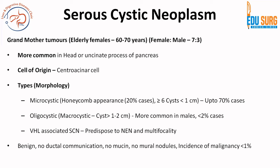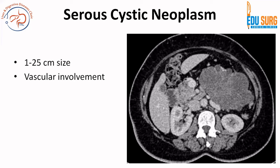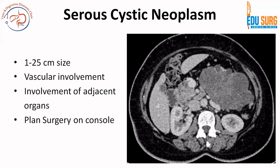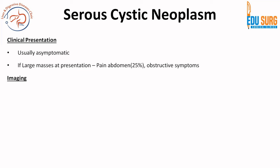Serous cystic neoplasms are benign. There is no ductal communication, no mucin, and no mural nodule — all our M's are absent. Incidence of malignancy is essentially non-existent, but WHO still considers it less than 1% and divides it into serous cystic adenoma and serous cystic adenocarcinoma. One image shown here is of a serous cystic neoplasm in the body and tail of pancreas. Tumor size can be large — 1 to 25 centimeters. We need to rule out vascular involvement and adjacent organ involvement before planning surgery. This patient underwent a spleen-preserving distal pancreatectomy. Most are asymptomatic, which is why they present as large masses. Large masses can lead to abdominal pain or obstructive symptoms.